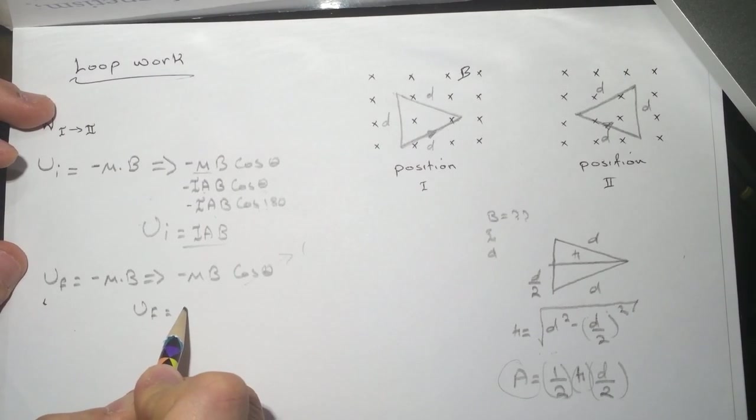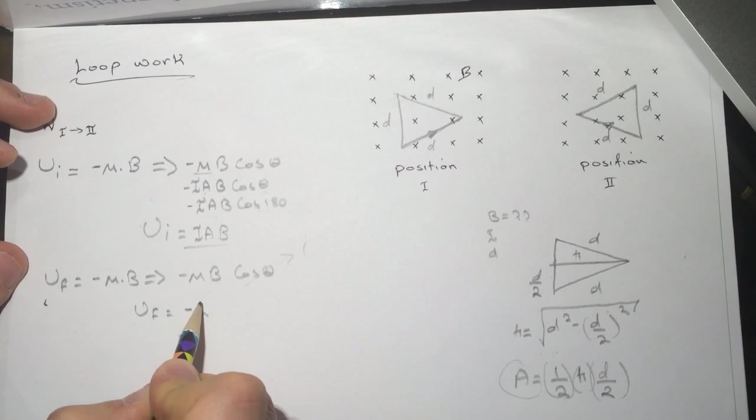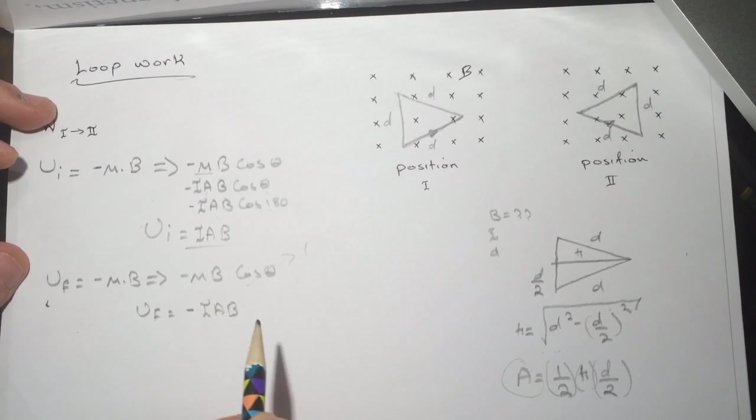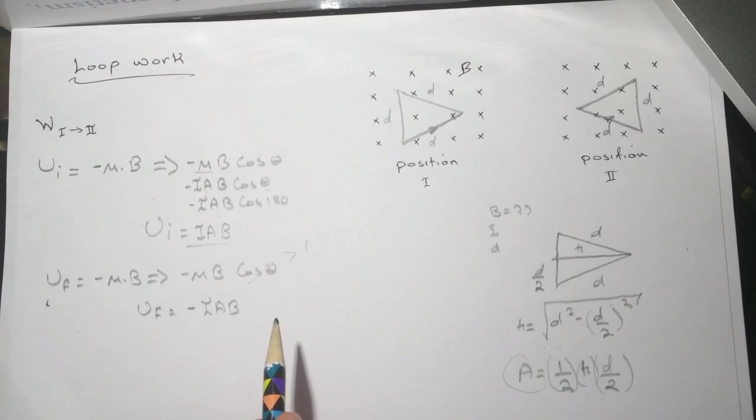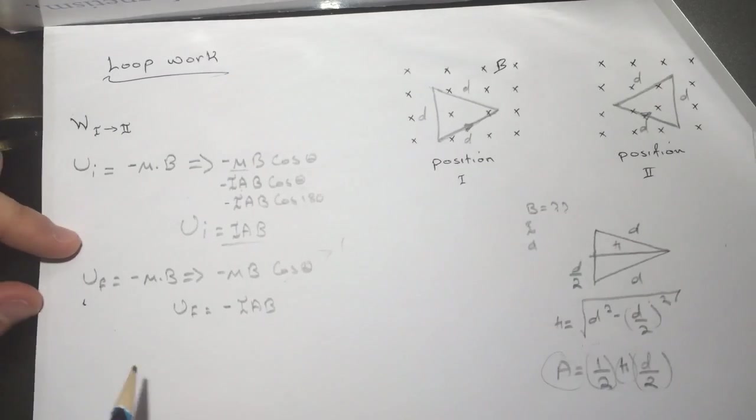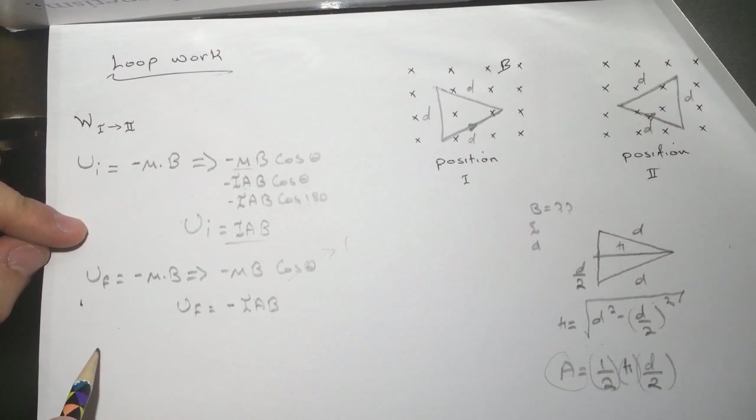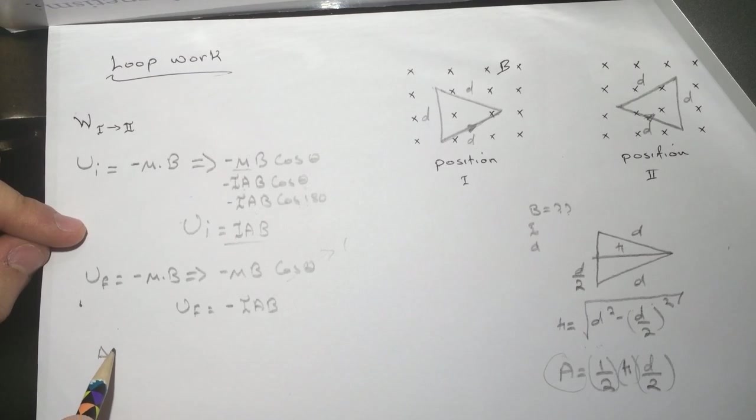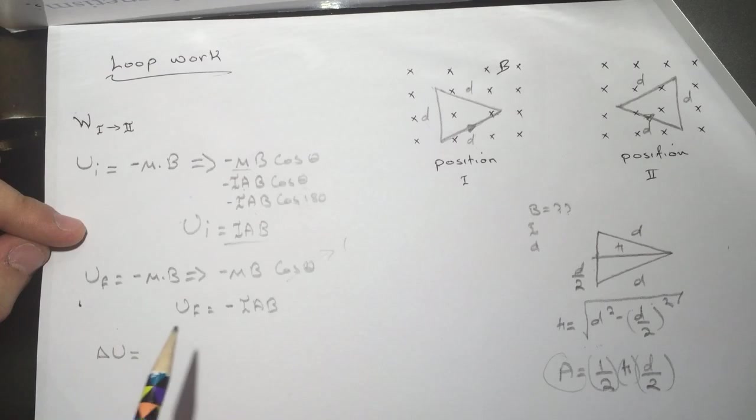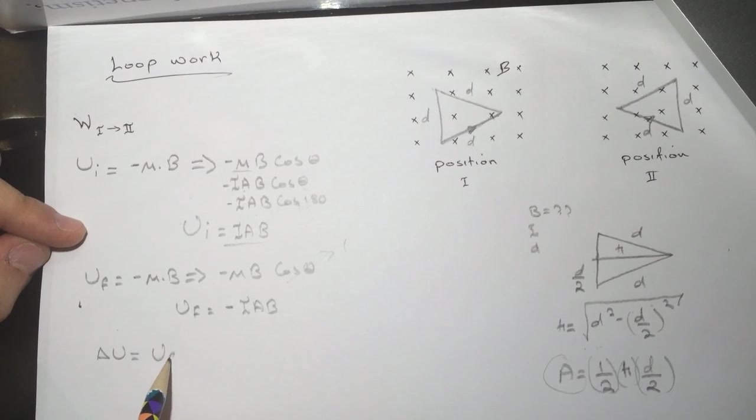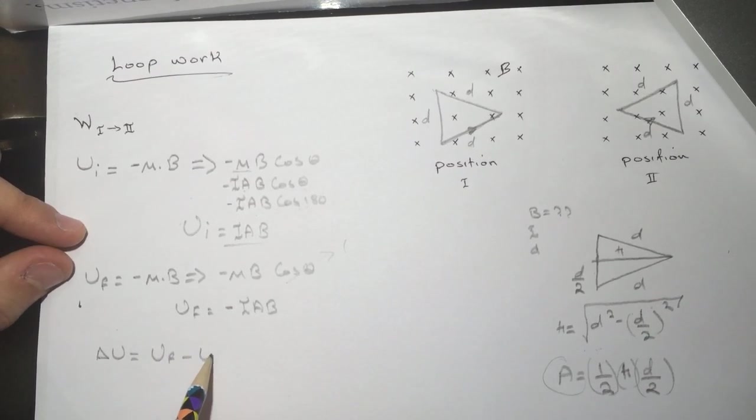Delta U will be equal to U final minus U initial.